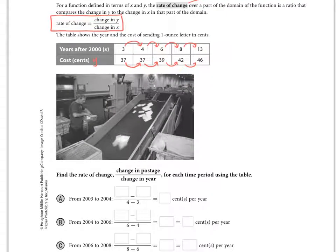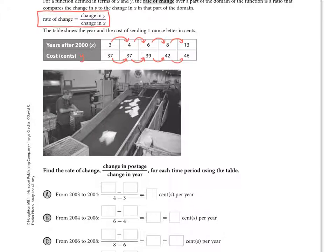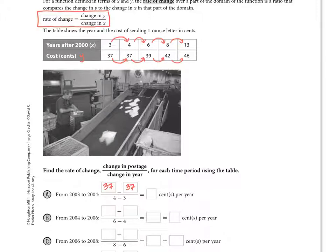Looking at parts A, B, and C — for part A, from 2003 to 2004, the cost is 37 cents both years. So the change in y is 0, and the change in x is 1 year, giving us 0 over 1, which is 0. From 2004 to 2006, the y value does change — it works out to 1 cent per year. Already, just from parts A and B, this situation is not linear.